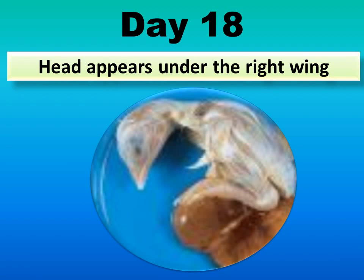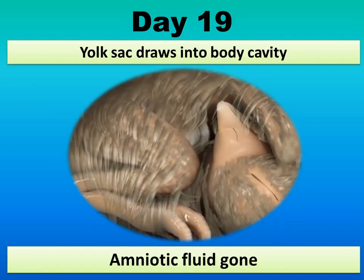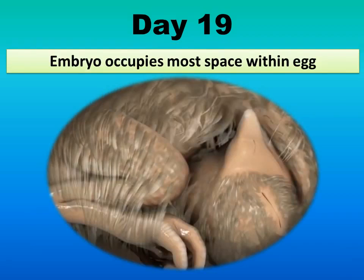On day eighteen, the head appears under the right wing. On day nineteen, the yolk sac draws into the body cavity, amniotic fluid is gone, and the embryo occupies most of the space within the egg.